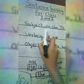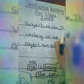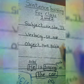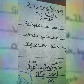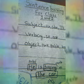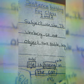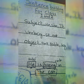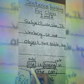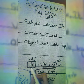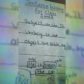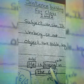For example, yahan pe kya hai — he, she, it — ye tino chizen sentence ke start mein aati hain. Just remember one thing: subject sentence ke start mein aata hai. That is called the subject. Jo humare sentence mein action ho raha hota hai, usay hum log verb kehte hain.